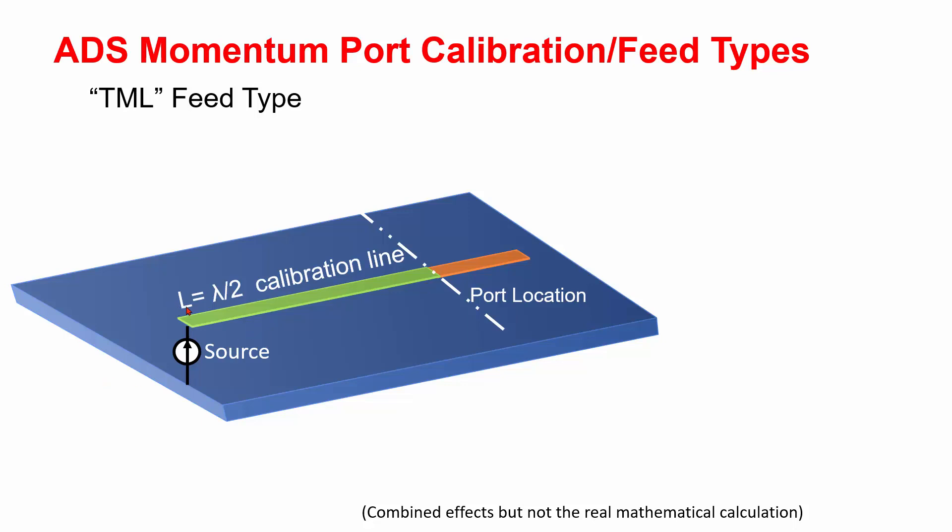Typically, the length L is a half wavelength. With two length L lines to be connected to each other, we create a perfect through calibration standard.